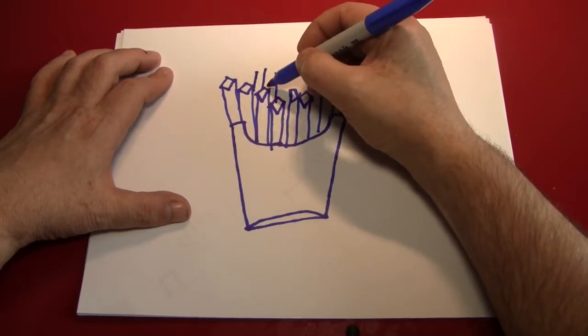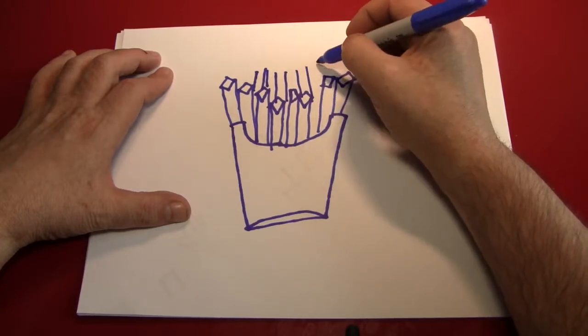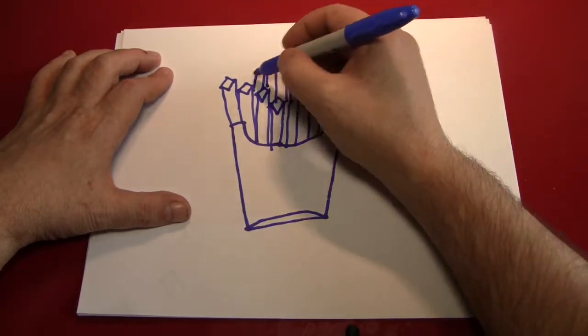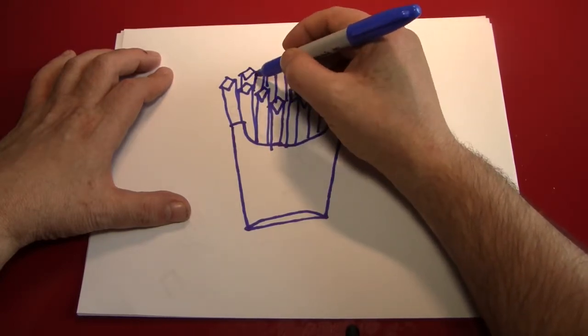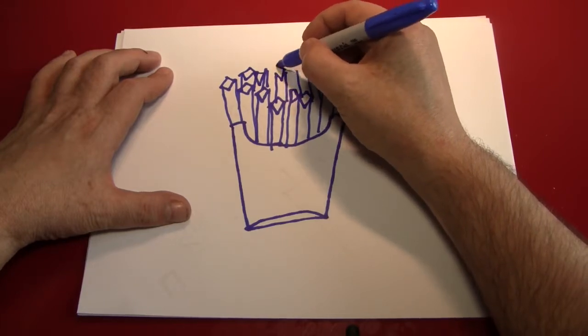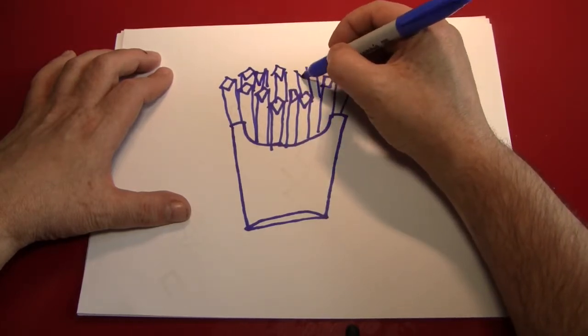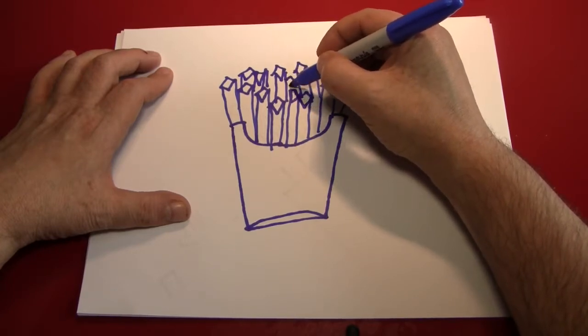So now we'll just bring up a couple more lines in the back like that. Not too many. And top those with little squares. And you can put as many fries in your little box as you want to. You can supersize it. It's up to you.